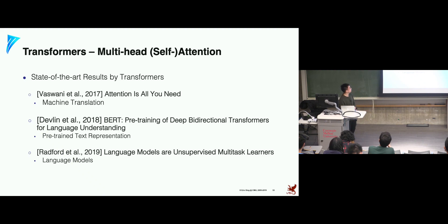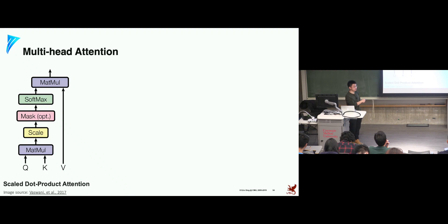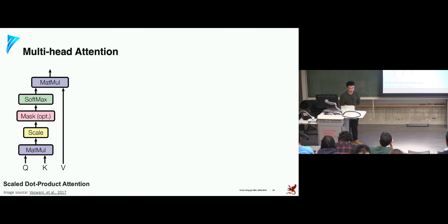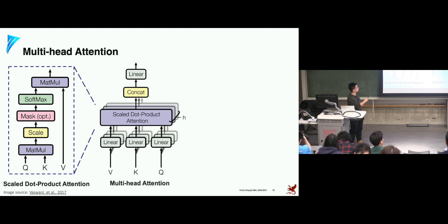The transformer architecture uses scaled dot-product attention as its core component. Given queries Q, keys K, and values V, we compute similarity between queries and keys, then aggregate values weighted by alignment scores. We replicate this attention building block multiple times — each replication is one head — giving us multi-head attention with H replications. We concatenate all the output hidden vectors from the different heads.